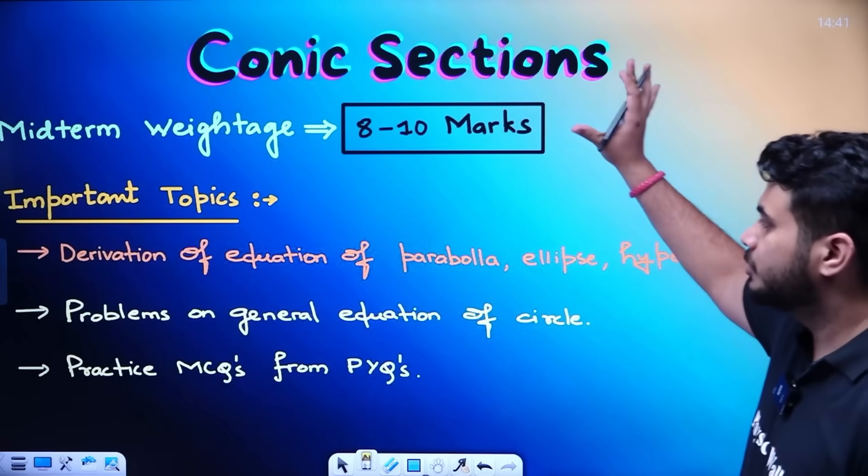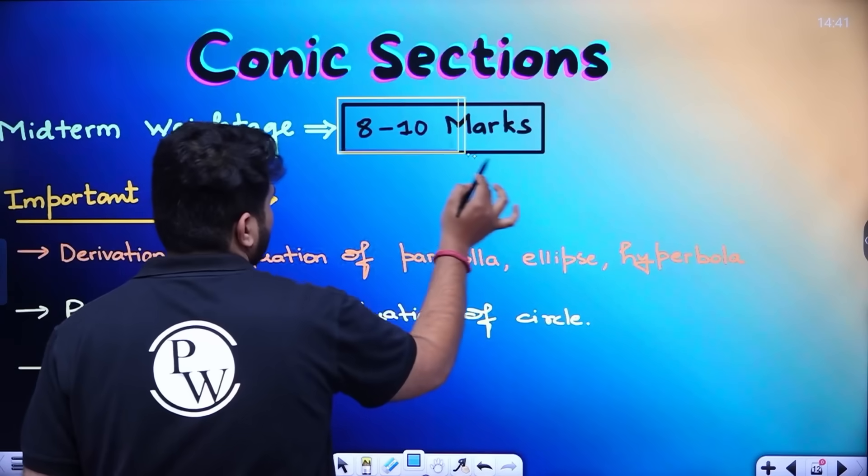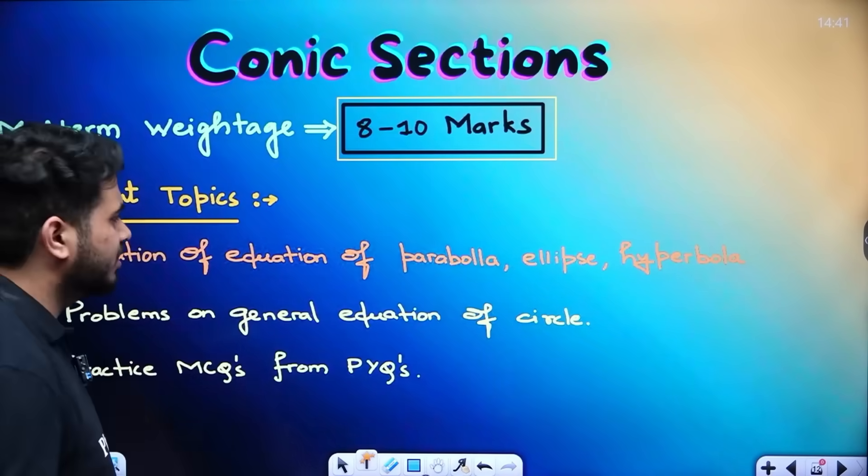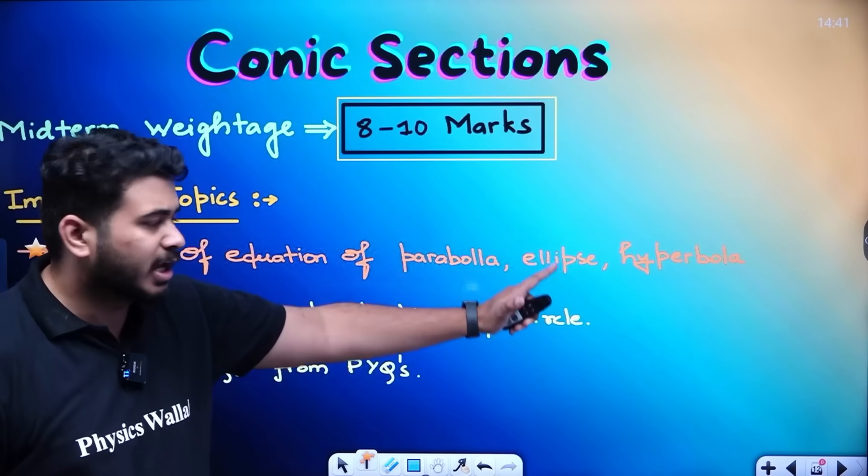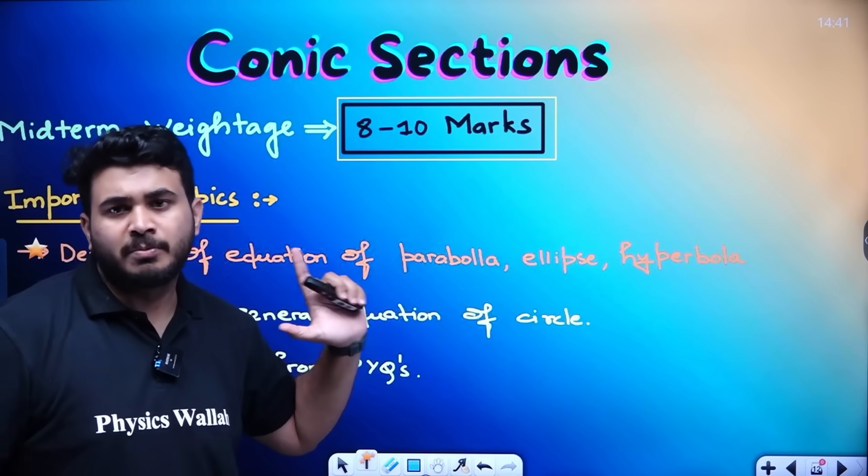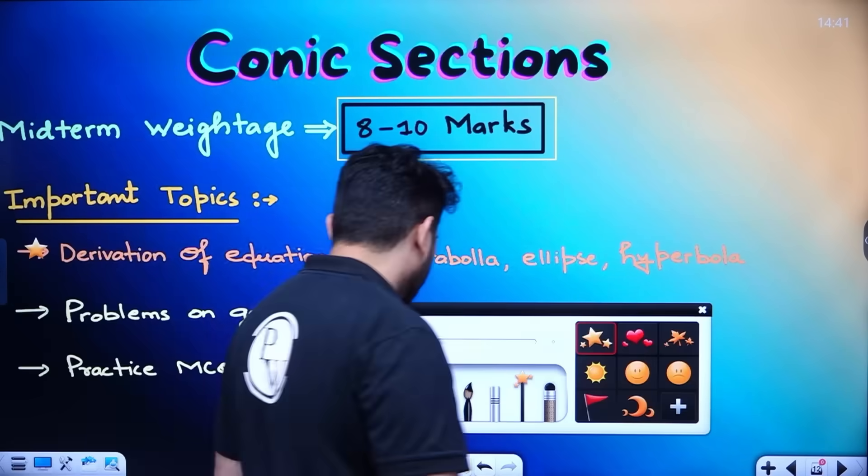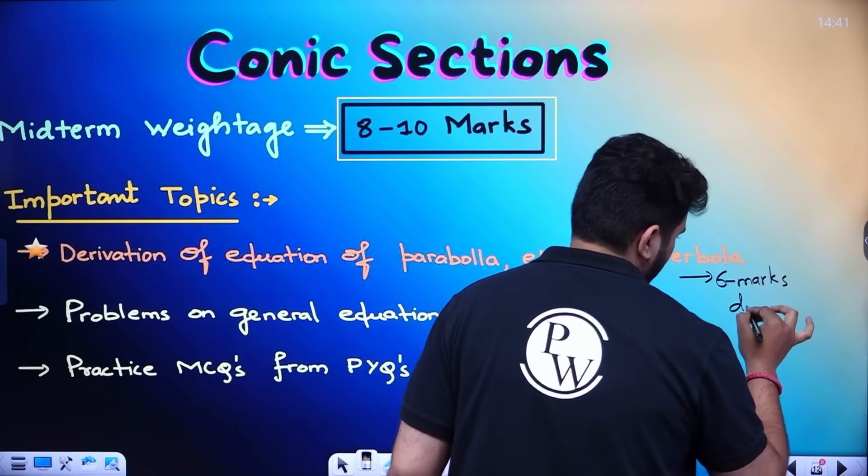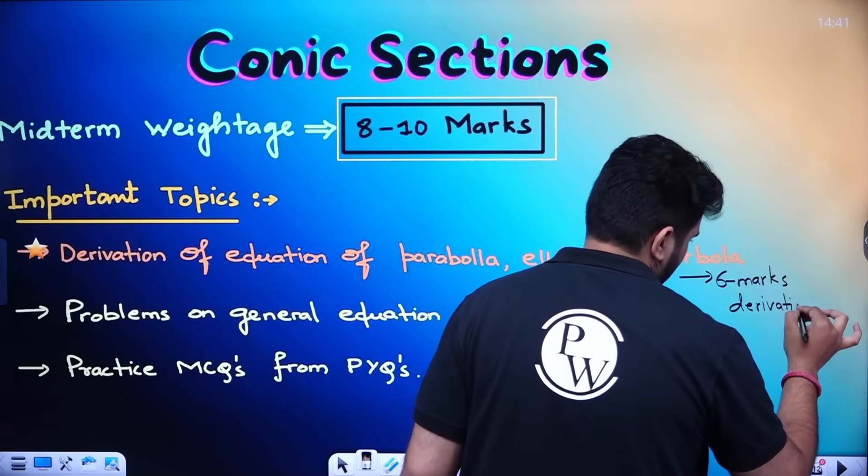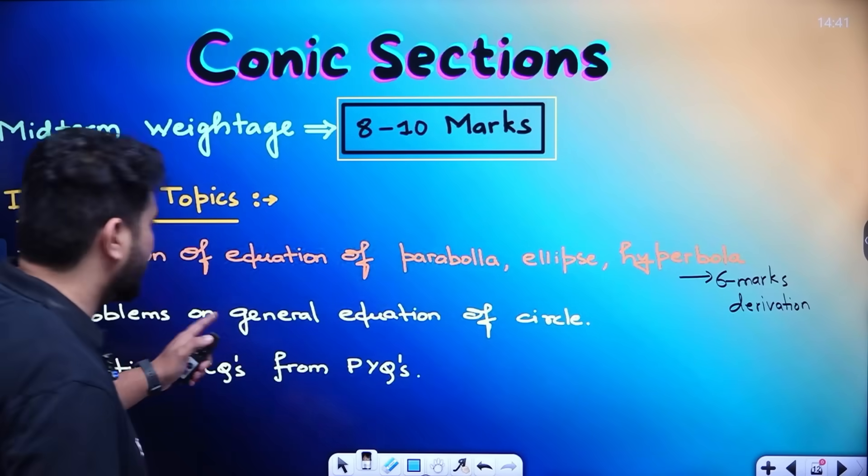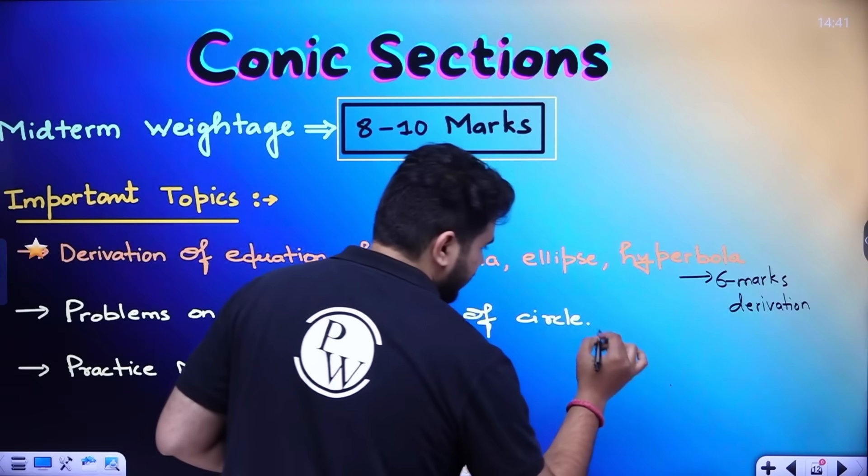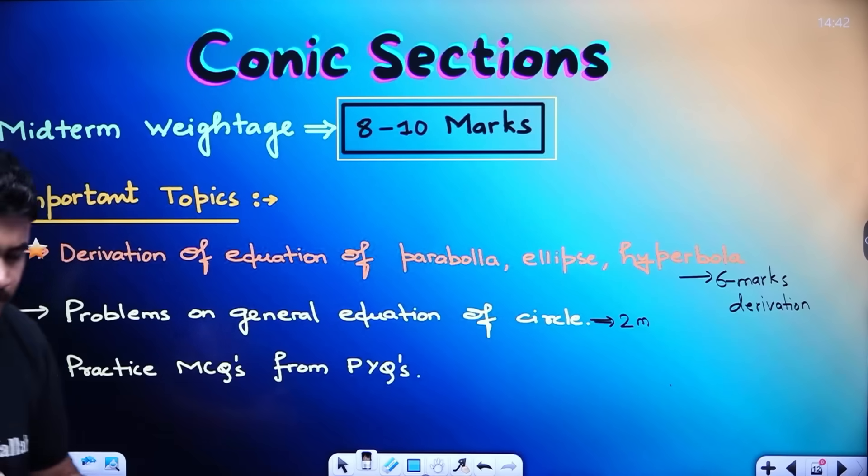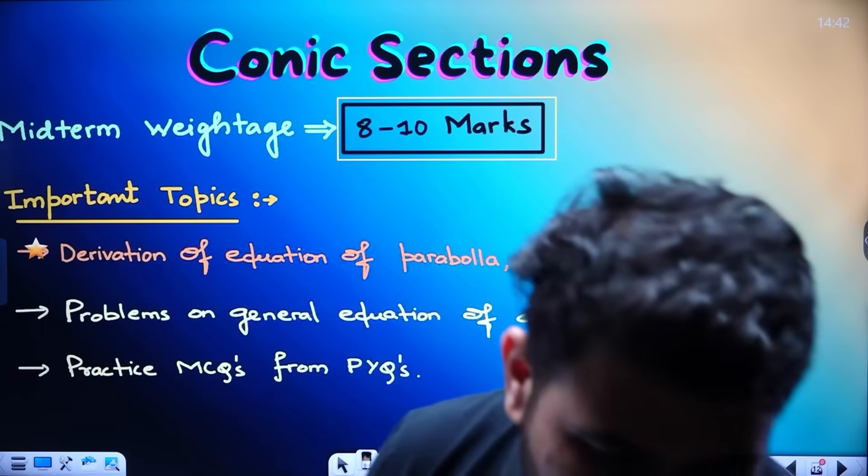Coming to the last topic students. That is conic sections. Midterm weightage is again 8 to 10 marks for this topic. So what are. What all things are important over here. One derivation 6 marks. The parabola, ellipse or hyperbola. One of them you need to derive. 100 percent you will get a question from here. 6 marks question. You will get a 6 marks derivation. Next. Moving on to the students. Problems on general equation of the circle. From here 1, 2 marks question. You will get a 2 marks question from here. And then practice MCQs from PYQs. You can attempt the questions over here.